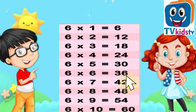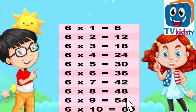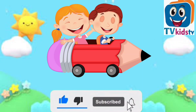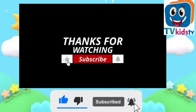Six sixes are thirty-six. Six sevens are forty-two. Six eights are forty-eight. Six nines are fifty-four. Six tens are sixty. Bye-bye kids! If you like my videos, please like and subscribe to my channel.